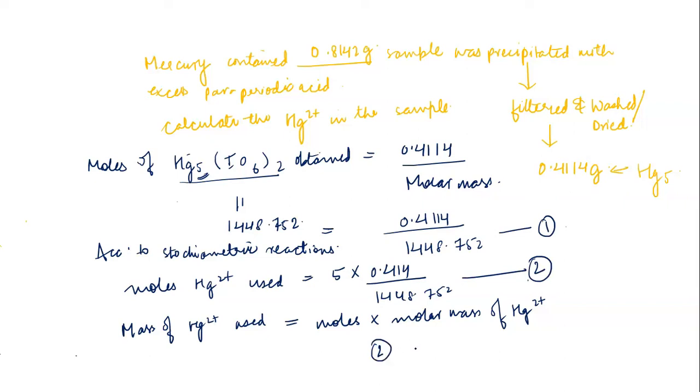Multiplying by the molar mass of 200 grams per mole, the percentage of mercury is calculated as mass of mercury divided by total sample mass times 100. Simplifying this gives 34.82 percent.